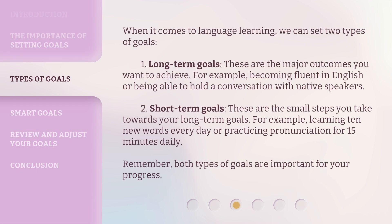When it comes to language learning, we can set two types of goals. 1. Long-term goals: these are the major outcomes you want to achieve — for example, becoming fluent in English or being able to hold a conversation with native speakers. 2. Short-term goals: these are the small steps you take towards your long-term goals — for example, learning 10 new words every day or practicing pronunciation for 15 minutes daily. Remember, both types of goals are important for your progress.